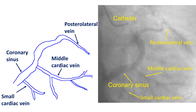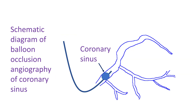Coronary venous circulation can be visualized by a coronary angiogram levophase. After filling the coronary arteries, the contrast drains into the coronary venous system, finally opacifying the coronary sinus which drains into the right atrium. Here is a coronary angiogram levophase with a line diagram beside it. To get better visualization of the coronary sinus and its tributaries, a balloon occlusion angiography of the coronary sinus is done by cannulating it retrogradely from the right atrium. However, this is done only just prior to CRT as there is a small risk of coronary sinus dissection.